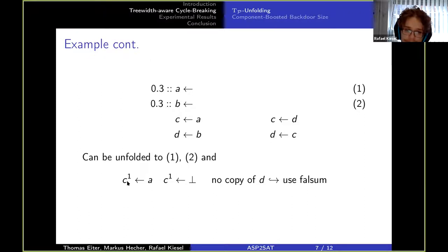So we add this rule here. We can derive c from d, but we don't have a copy of d yet. So instead of d we use false, meaning that we will not be using this rule.